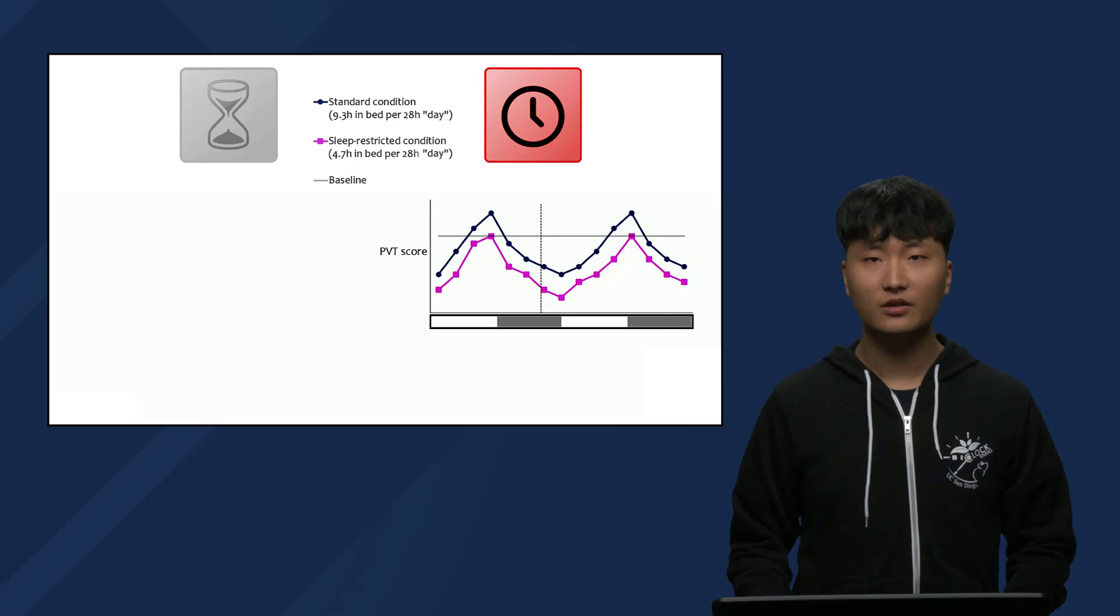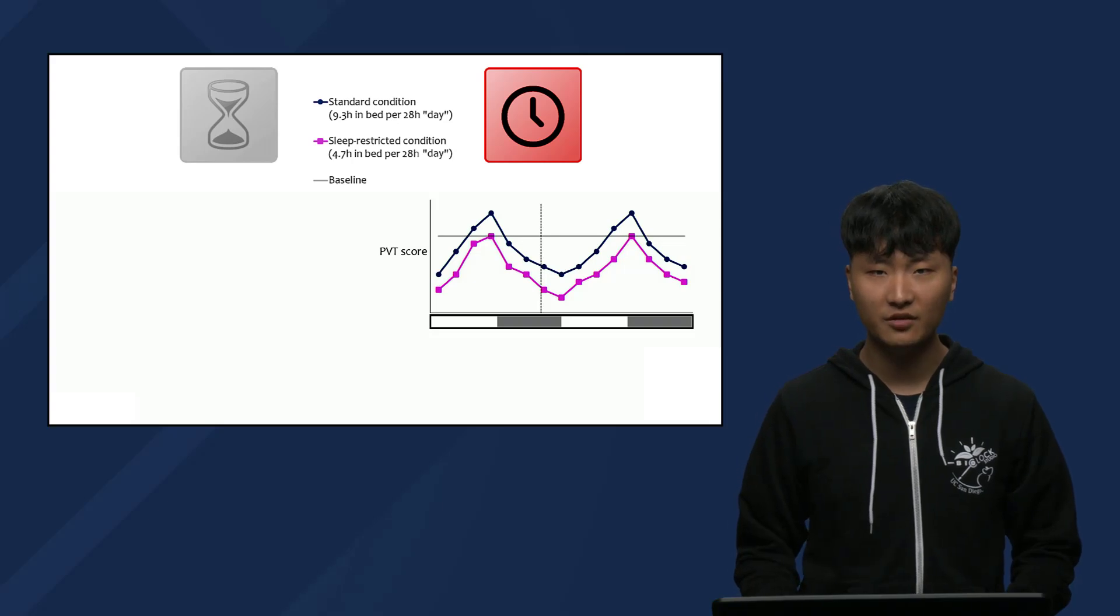Now, in this other graph, the x-axis is the circadian phase of the participants when they are taking the PVT. So we are primarily examining the effects of Process C. Remember, because of the 28-hour day protocol, they have now taken the PVT at all circadian phases. Some of the data in the last graph appeared here also, just plotted differently. We can see that the researchers have plotted two days overall. The white bars underneath represent biological day, and the gray bar represents biological night. To define biological day and night, since it is not synced with the light-dark cycle, the researchers used each participant's body temperature minimum, which occurs late in subjective night, as a phase reference, represented here by the dotted line.